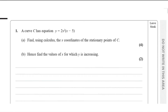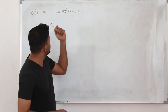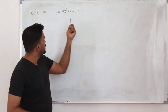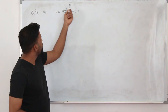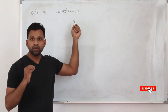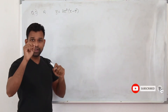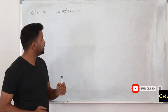Question number 1. A curve C has equation y equals 2x squared into x minus 5. Find using calculus the x-coordinates of the stationary points of C — that's question number 1, part A. You are given a function and they want you to find the x-coordinates of the stationary points.